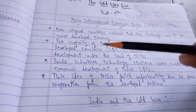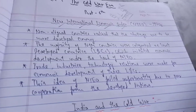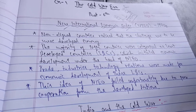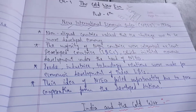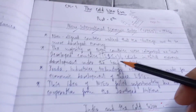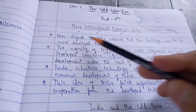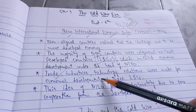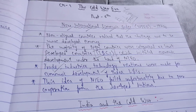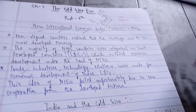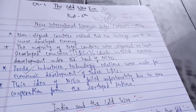The majority of NAM countries were categorized as least developed countries — they lacked basic amenities and facilities. Their main focus after decolonization was to achieve economic development. So to improve their condition, trade, industries, technology, and other economic development activities were started by NIEO to raise the level of these underdeveloped countries to developing nations.